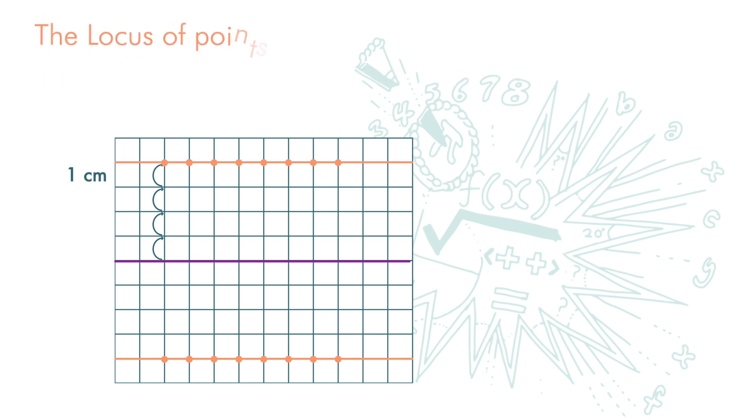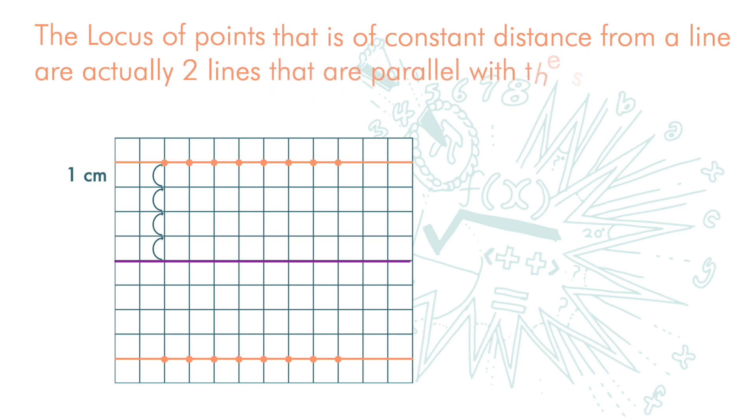So the locus of points that is of constant distance from a straight line are actually two lines that are parallel with the straight line.